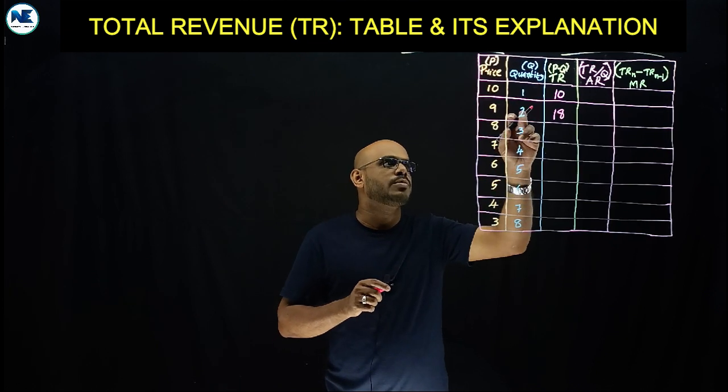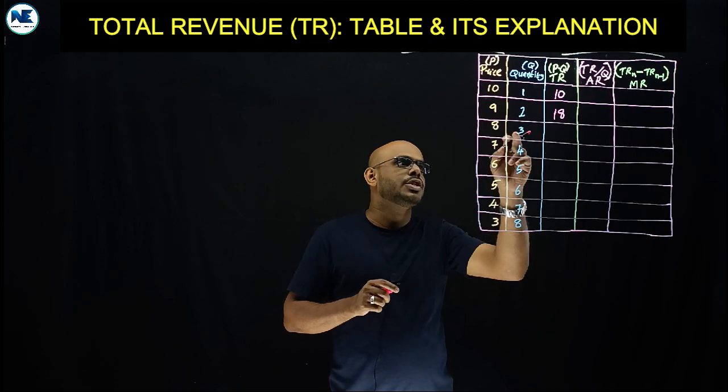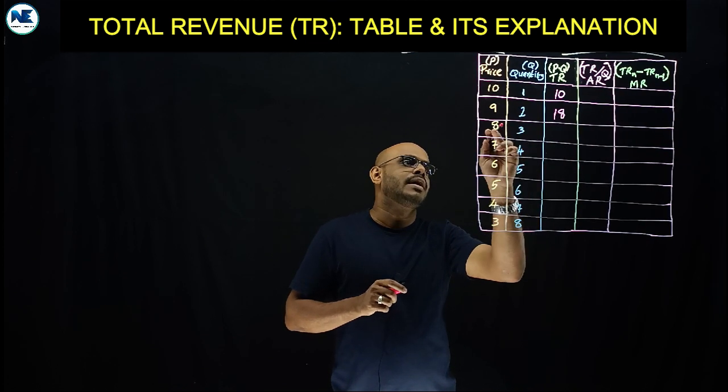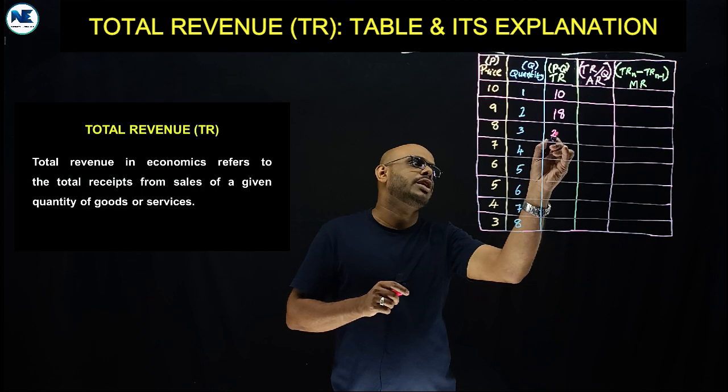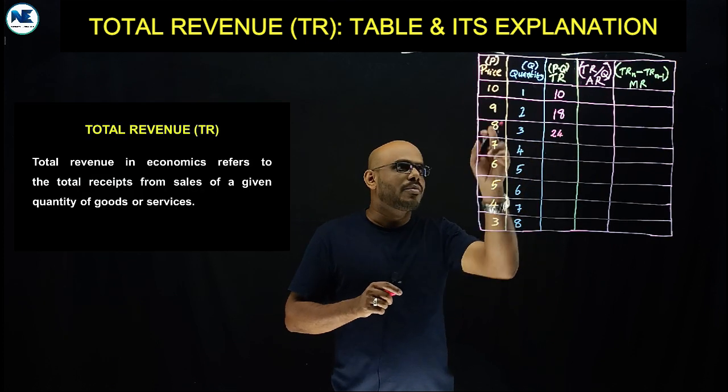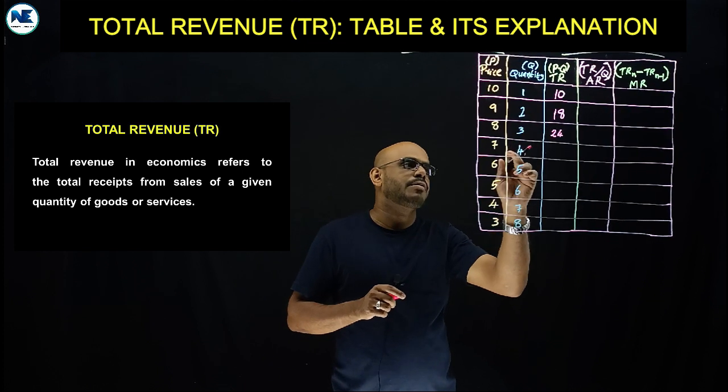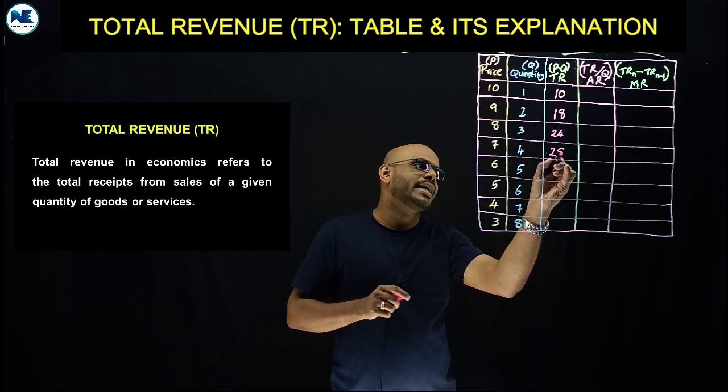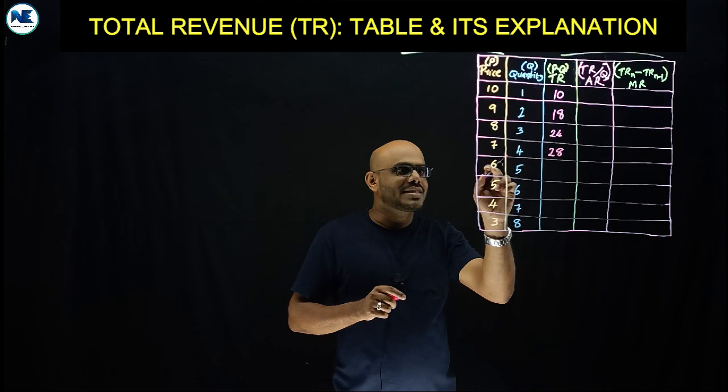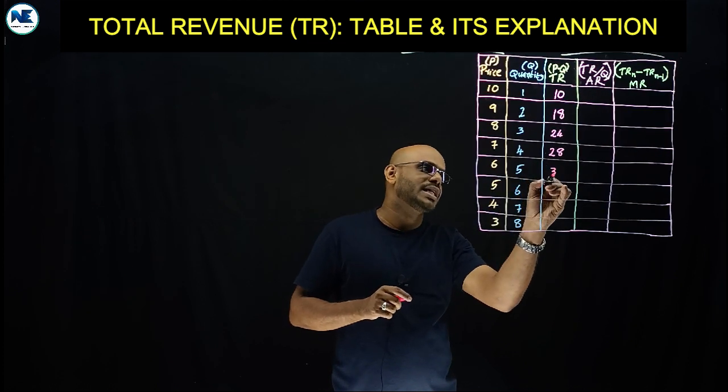The quantity increased from 2 to 3, then TR is 8 into 3, which is 24. Then price is 7, quantity is 4, so 7 into 4 equals 28. Then price is 6, so 6 into 5 equals 30.